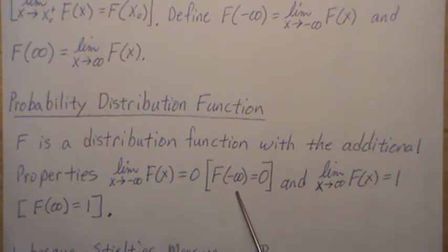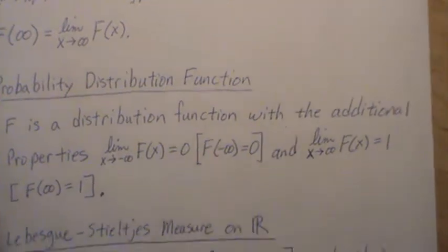So that means F(-∞) is zero, and that F(∞) is one. As x approaches infinity, F(x) approaches one, and those are probability distributions.